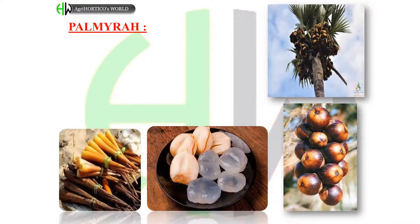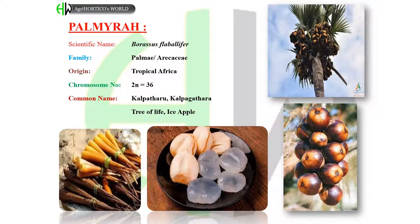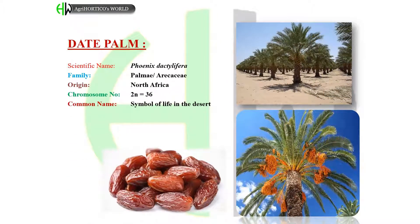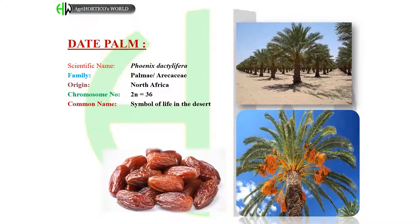Palmyra: scientific name: Borassus flabellifer. Family: Arecaceae. Origin: Tropical Africa. Chromosome number: 2n = 36. Common name: Symbol of life in the desert.